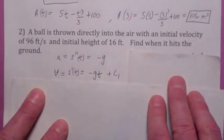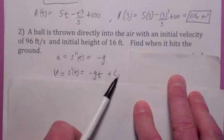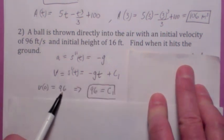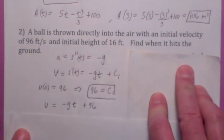Use it once, take the anti-derivative, the anti-derivative of a is v of t, which is s prime. You get negative gt plus some constant. And since you're given the initial velocity is 96, you plug in zero for t, and you get c1 is 96 feet per second.